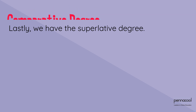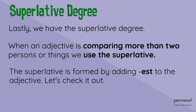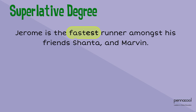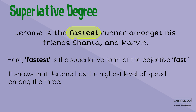Lastly, we have the superlative degree. When an adjective is comparing more than two persons or things, we use the superlative. The superlative is formed by adding -est to the adjective. For example: Jerome is the fastest runner amongst his friends Shanta and Marvin. Here, 'fastest' is the superlative form of the adjective 'fast'. It shows that Jerome has the highest level of speed among the three.